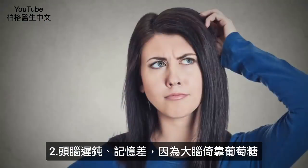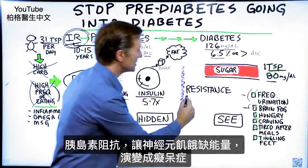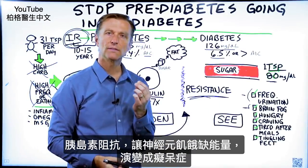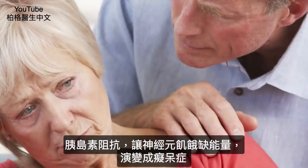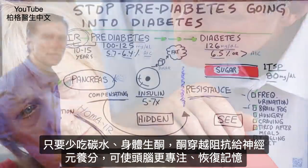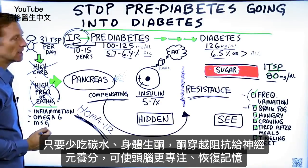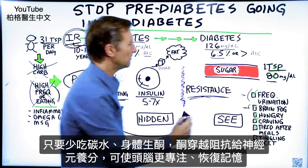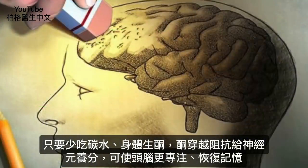Brain fog and memory problems, because your brain is dependent on glucose. And when you have resistance, you starve the neurons of their fuel and you start becoming forgetful — it's the start of dementia. But when you cut out the carbs, you'll be running your body on ketones and you can bypass that whole thing, feed your brain, and you'll actually have a lot more focus and less memory problems.